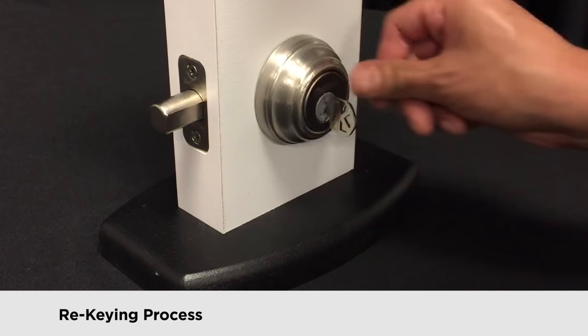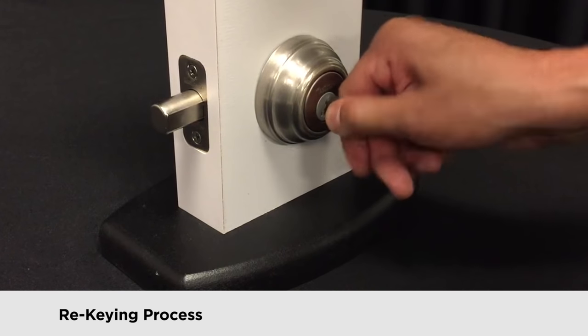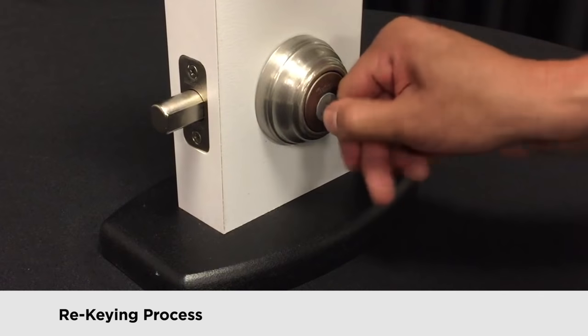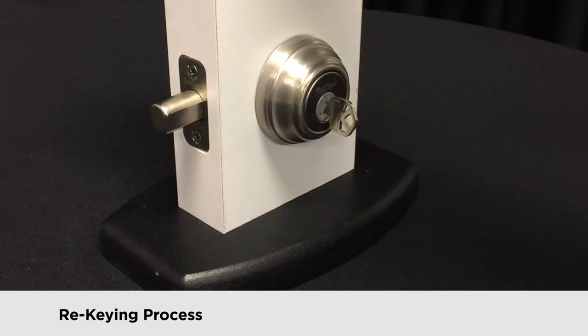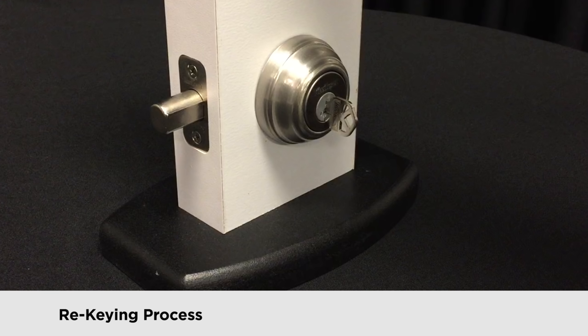Now, if you test the key, it won't work. The cylinder either learned a partial section of the key, or it's not aligned with the key cuts, depending on how it was misprogrammed during rekeying.